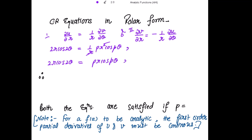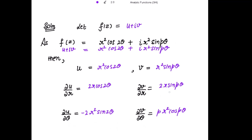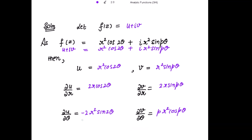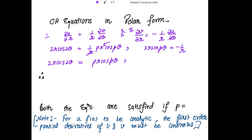For the second Cauchy-Riemann equation, substituting ∂v/∂r = −(1/r)·∂u/∂θ gives 2r·sin(pθ) = −(1/r)·(−2r²sin(2θ)). The negatives cancel and the r simplifies, giving sin(pθ) = sin(2θ).